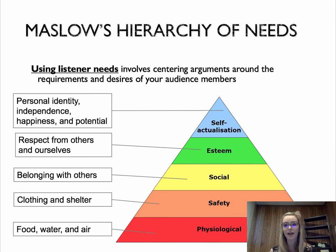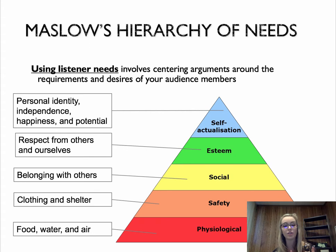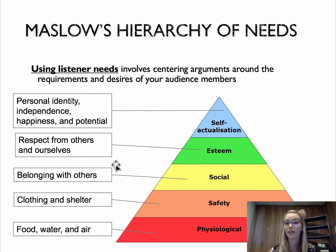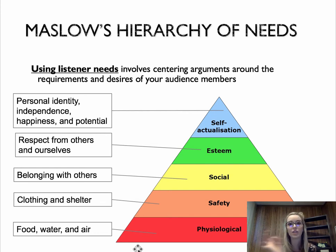Thinking about speech topics here — what could we tackle? The need for clean water around the world, the need to adopt, the need to stop bullying for social needs. Esteem could be beauty or body image. Self-actualization — that personal identity, happiness, and potential — that's really hard to tackle. Organ donation is another one, fitting probably into physiological and safety. So tackling those big things and weaving in these principles from these theories — that 30% new information and that 70% positioning — that's where you can use these theories.